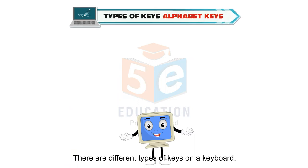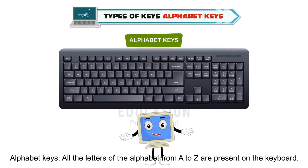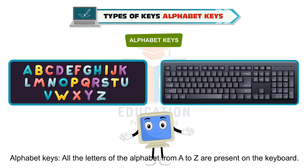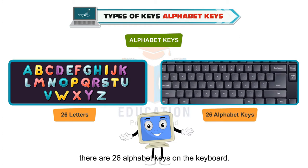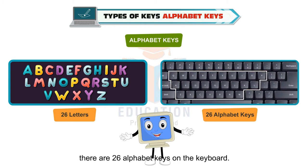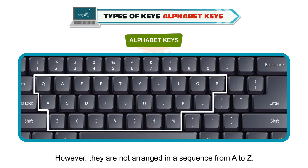There are different types of keys on a keyboard. Alphabet Keys — all the letters of the alphabet from A to Z are present on the keyboard. Since there are 26 letters in the English alphabet, there are 26 alphabet keys on the keyboard. However, they are not arranged in a sequence from A to Z.